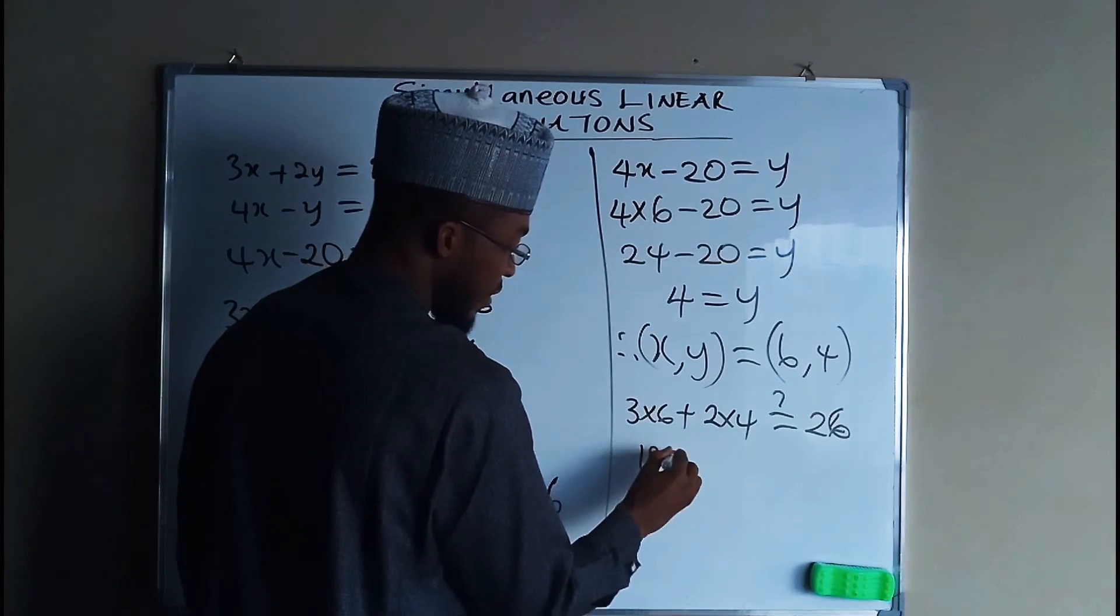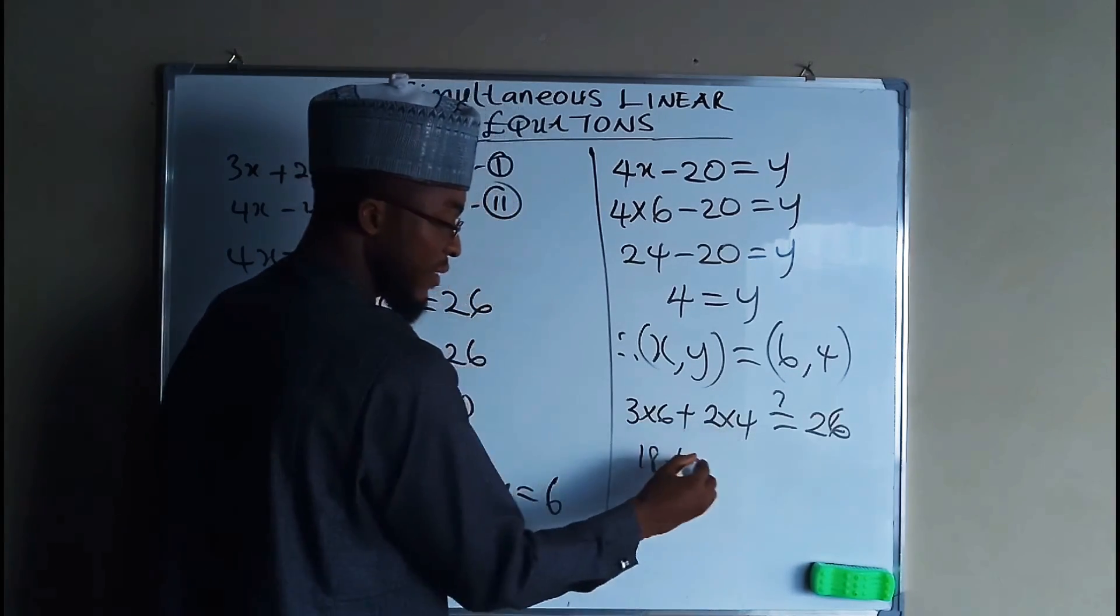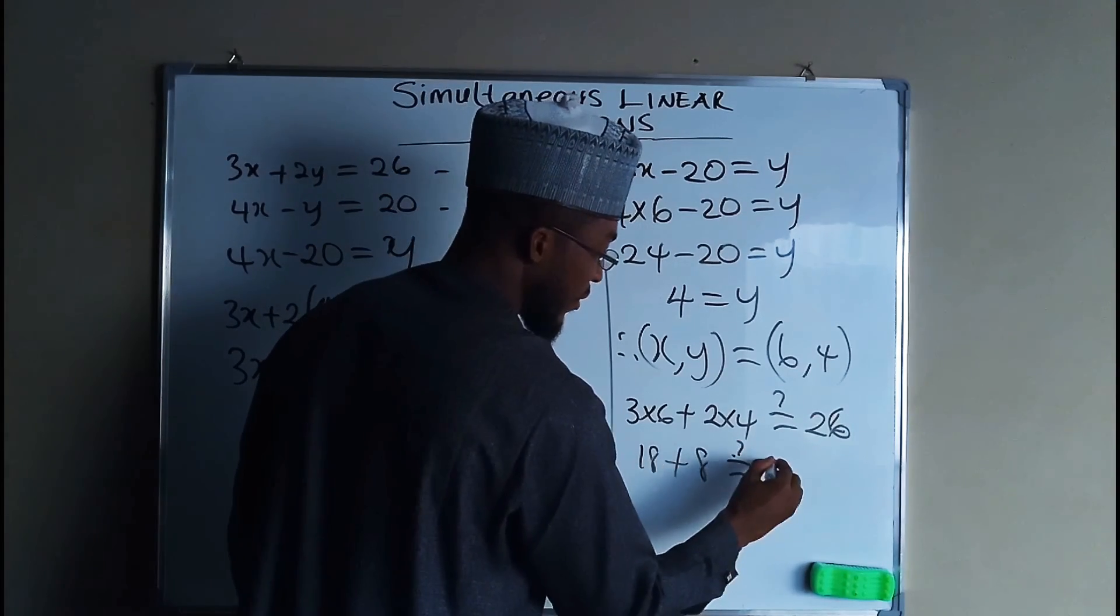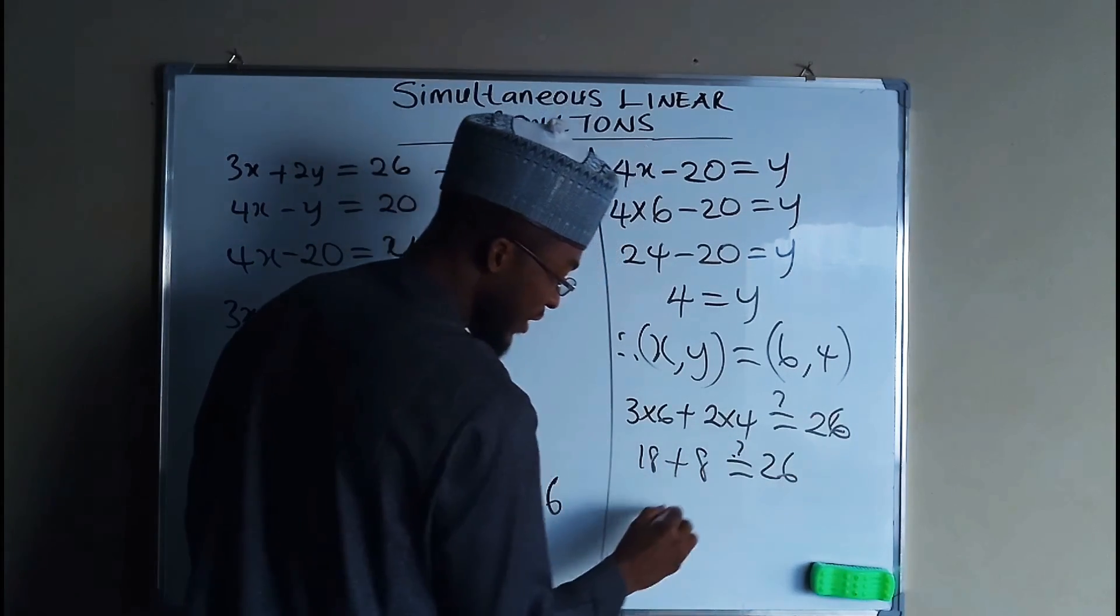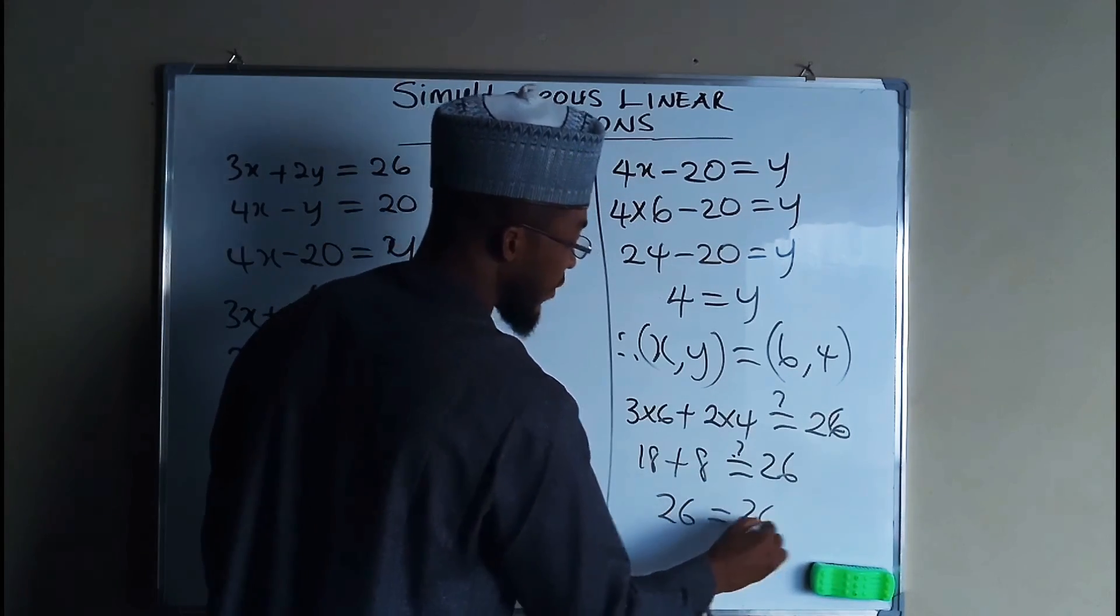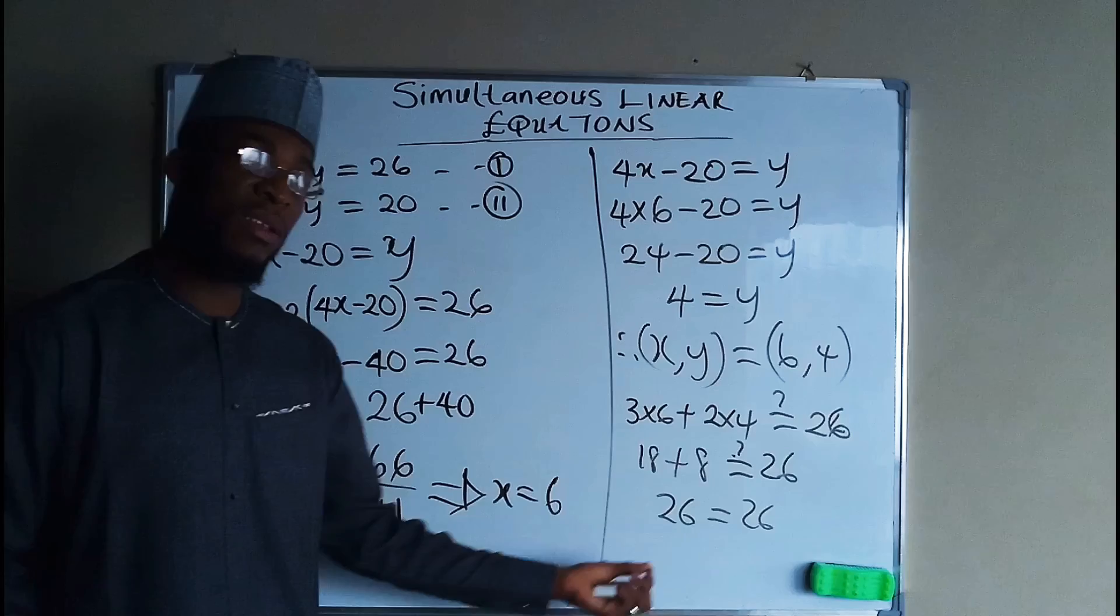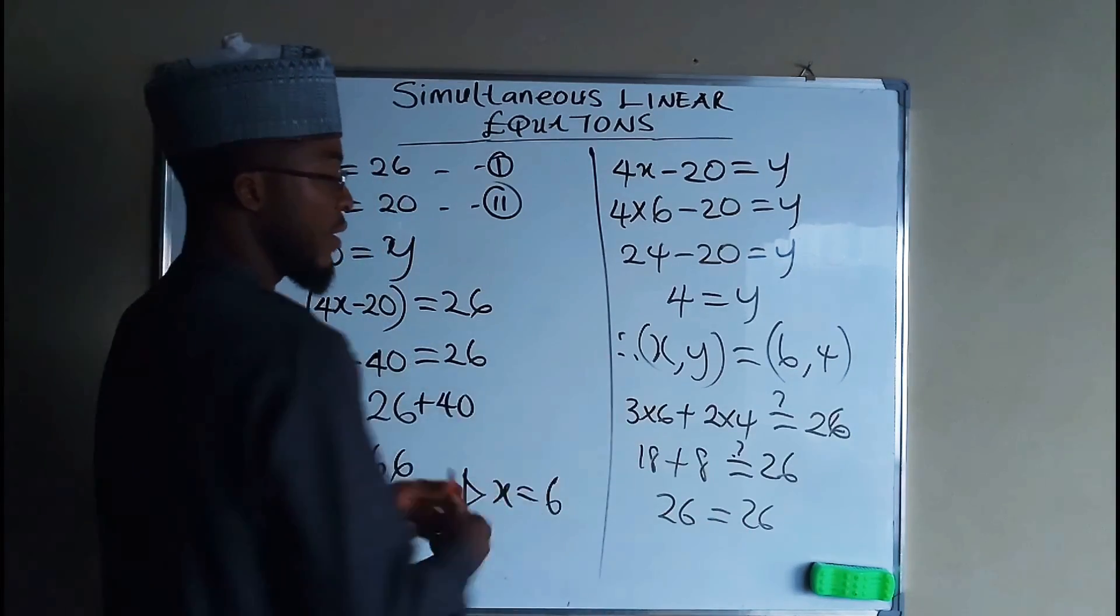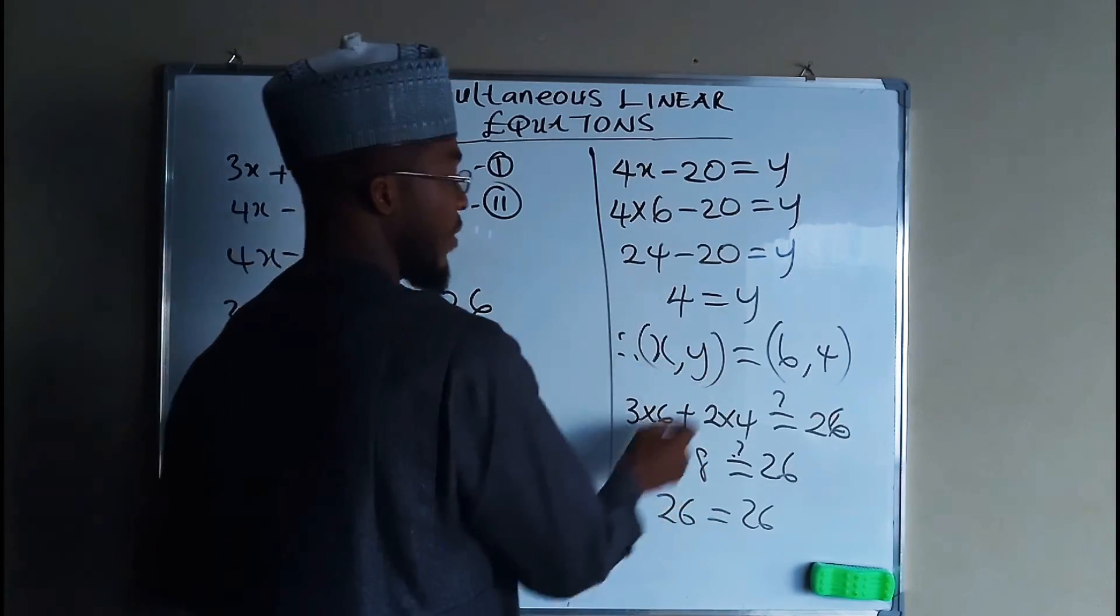But this is 18 plus 8. Is it equal to 26? Definitely, this plus this is 26, which is equal to 26. Since the left-hand side is equal to the right-hand side, hence the value of x and y are 6 and 4.